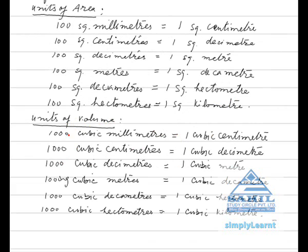Units of volume: 1000 cubic millimeters is equal to 1 cubic centimeter. 1000 cubic centimeters is equal to 1 cubic decimeter. 1000 cubic decimeters is equal to 1 cubic meter. 1000 cubic meters is equal to 1 cubic decameter. 1000 cubic decameters is equal to 1 cubic hectometer. 1000 cubic hectometers is equal to 1 cubic kilometer.